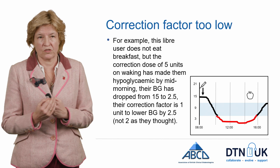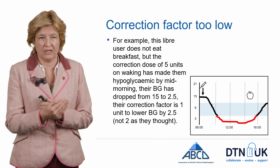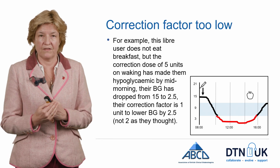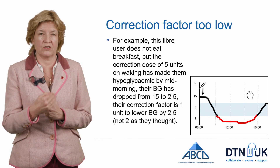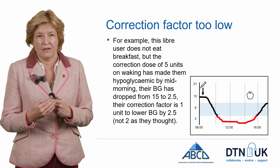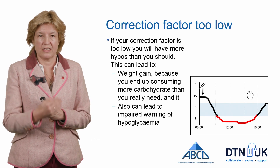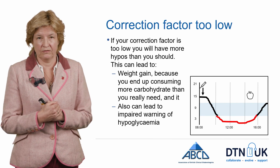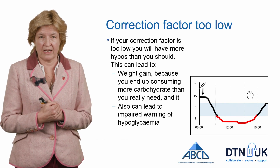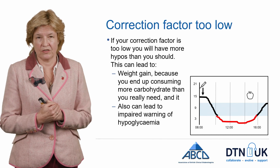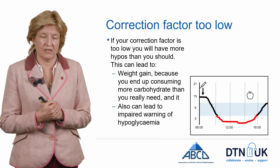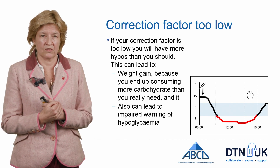This patient also woke up with a glucose of 15 in the morning. They injected five units because they thought each unit would drop their glucose by 2, but in fact each unit dropped their glucose by 2.5 — a total drop of 12.5. The problem with this is that over time you'll end up treating hypos more often, consuming more calories than you need, and in the longer term this can lead to weight gain. Having more hypos than you really need can also impair your warnings of hypoglycemia in the long term. So it is something worth sorting out.